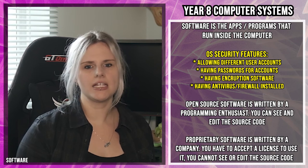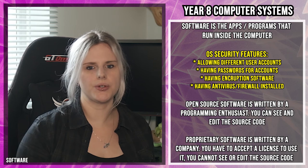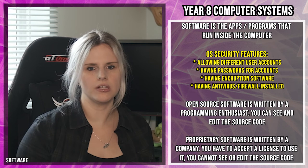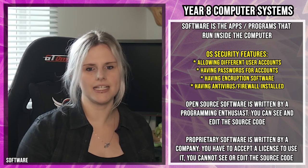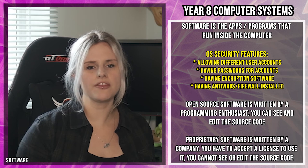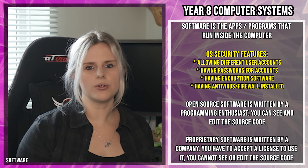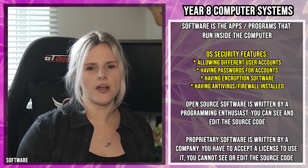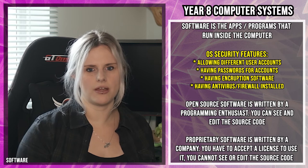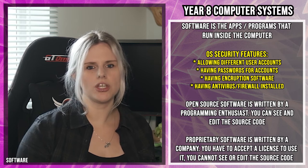Operating systems also have antivirus software and firewalls installed. Antivirus software periodically scans your computer for any code it thinks is harmful. If it finds something it alerts you — it doesn't automatically delete it because it might be wrong; it might have mistaken a picture for harmful code. Firewalls stop hackers from being able to access your system by monitoring all data leaving and entering your computer, and blocking anything suspicious.